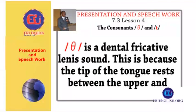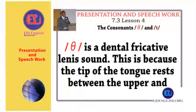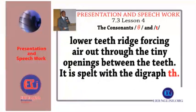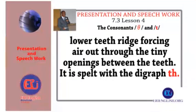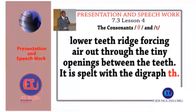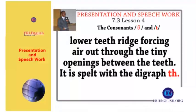F is a dental fricative, linear sound. This is because the tip of the tongue rests between the upper and lower teeth ridge, forcing out air through the tiny openings between the teeth. It's spelled with a digraph T-H.